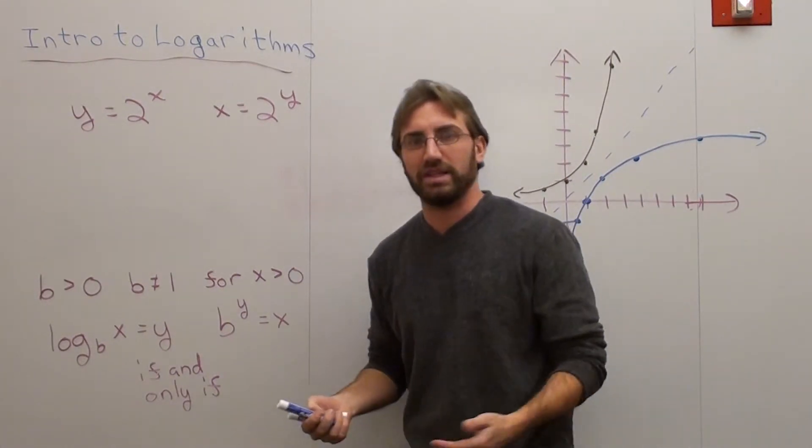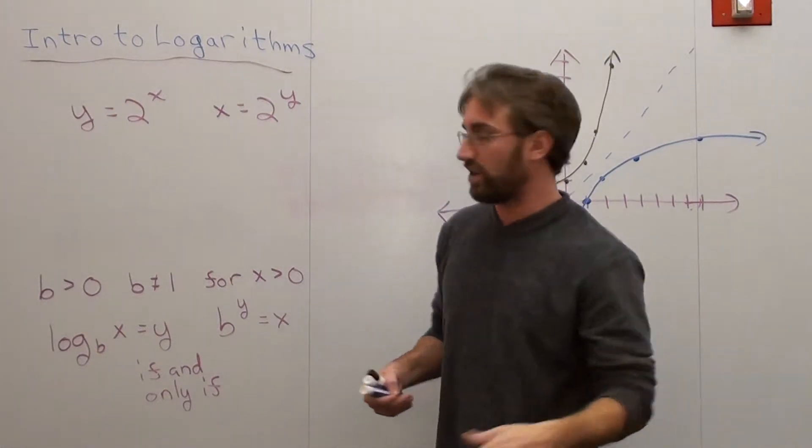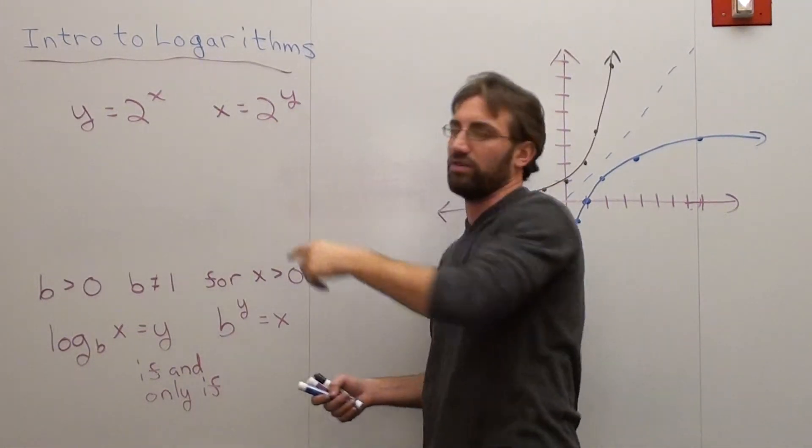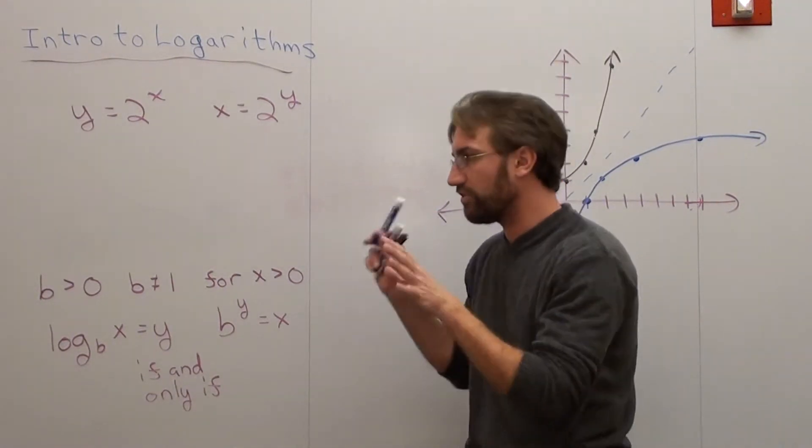Now, how do I get y by itself? And some people say, well, don't you divide by 2? And the answer is no, you don't divide by 2. Because this isn't 2 times y equals x. It's 2 to the power of y equals x. What you do is this little fun little thing right here.